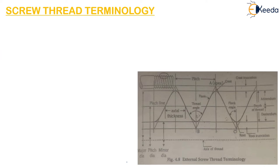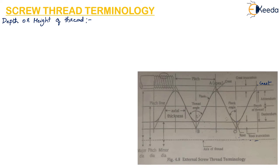Depth or height of the thread is the distance between the crest of the thread and the root of the thread, measured perpendicular to the longitudinal axis of the thread. So if this is the longitudinal axis, the depth of the thread is measured perpendicular to this axis.